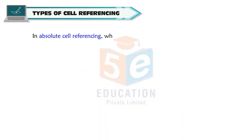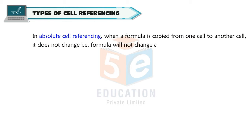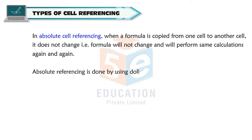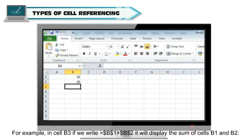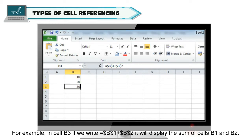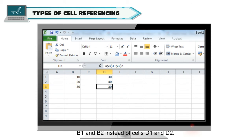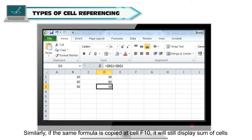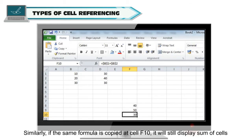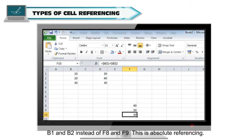In absolute cell referencing, when a formula is copied from one cell to another, it does not change — the formula will perform the same calculations again and again. Absolute referencing is done by using the dollar sign. For example, in cell B3, if we write =$B$1+$B$2, it will display the sum of cells B1 and B2. If the same formula is copied to D3 or even F10, it will still display the sum of cells B1 and B2. This is absolute referencing.